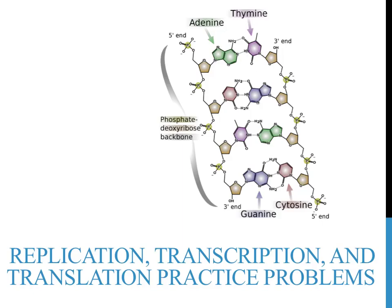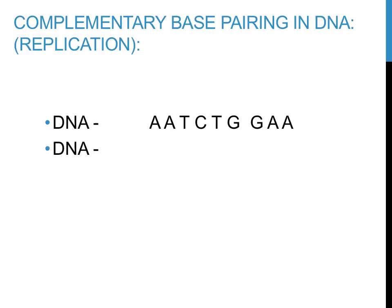The image on this slide shows the complementary base pairing between adenine and thymine, as well as the base pairing between guanine and cytosine in a DNA molecule. During replication, one strand of DNA is split in half and complementary base pairing occurs, matching new nucleotides to the original or template strands. Our original strand for this example is A-A-T-C-T-G-G-A.